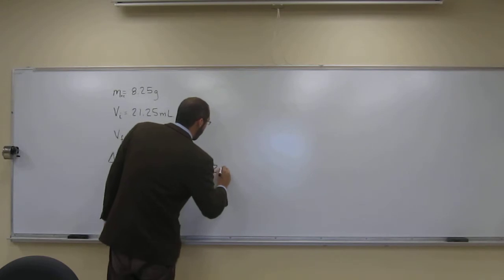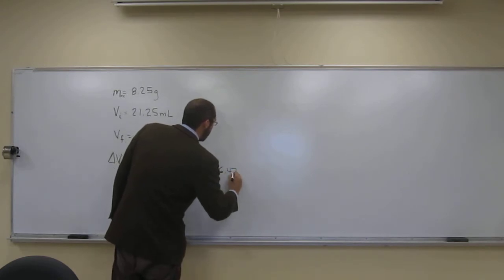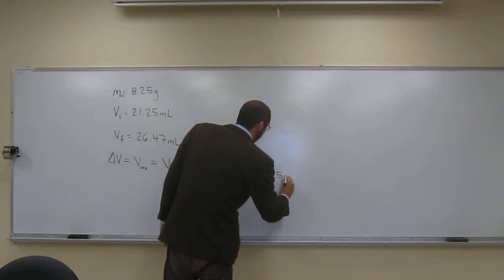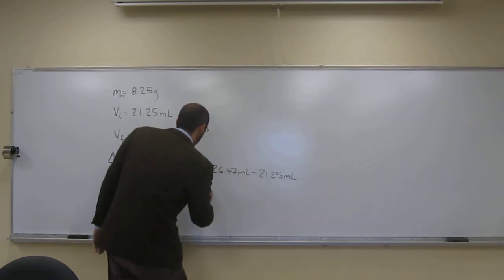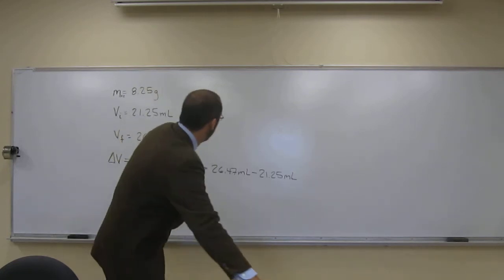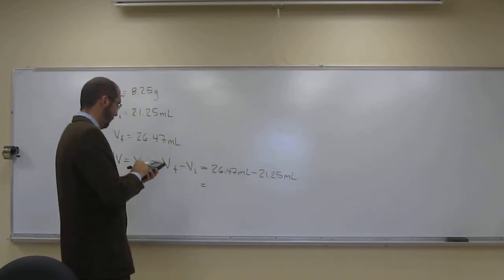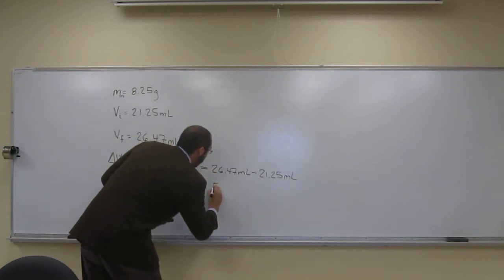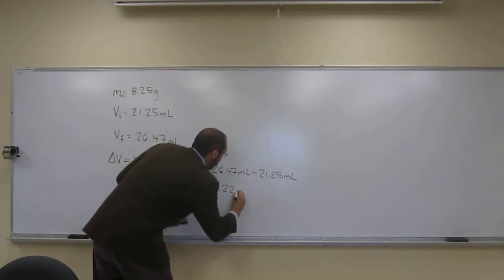So what is that going to be? 26.47 mils minus 21.25 mils. 5.22 mils.